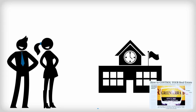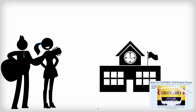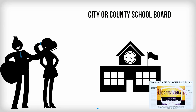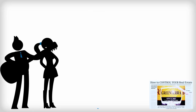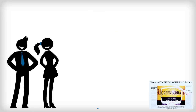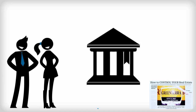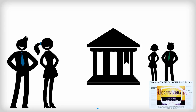You can get information about school systems by contacting the city or county school board or the local schools. You may also want to visit the local library. It can be an excellent source for information on local events and resources, and the librarians will probably be able to answer many of the questions you have.